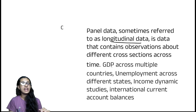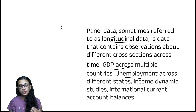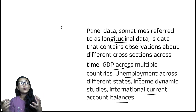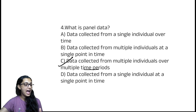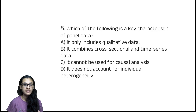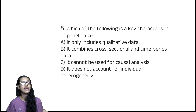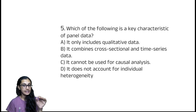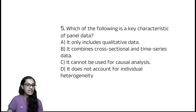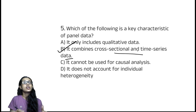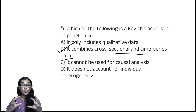For example, we collect GDP, unemployment, and current account balances — that is panel data. Which of the following is a key characteristic of panel data? It combines cross-sectional and time series data. The right answer is option B: it combines cross-sectional and time series data, blending them together.